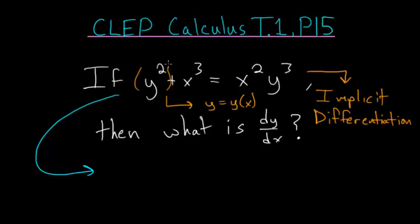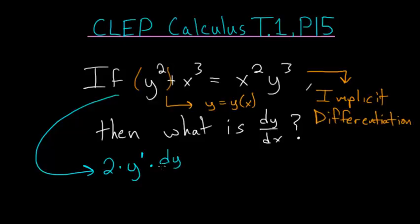With y squared, we'll bring the two down in front, the inner function will stay the same, and we'll decrease the exponent by 1. Now we just multiply by the derivative of this inner function y, and the derivative of y we write as dy over dx. Then we add the derivative of x to the third power, which is just 3x squared.